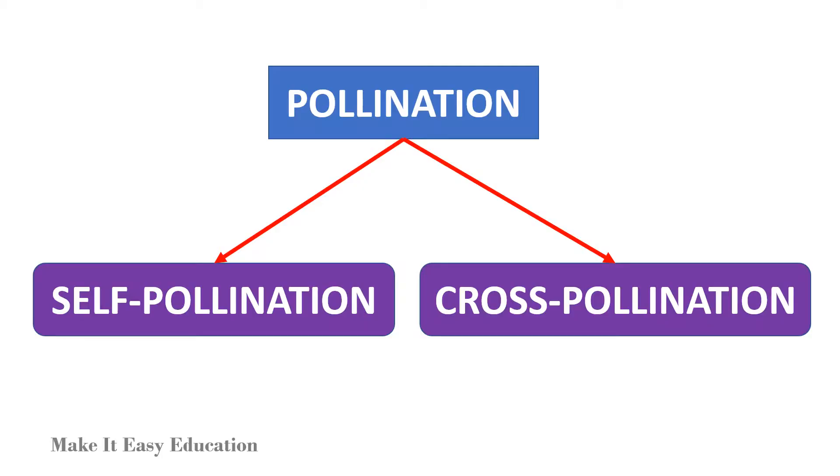There are two main types of pollination: self-pollination and cross-pollination.